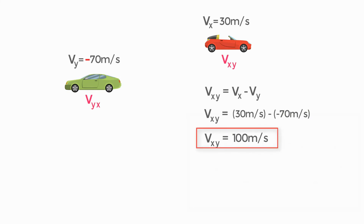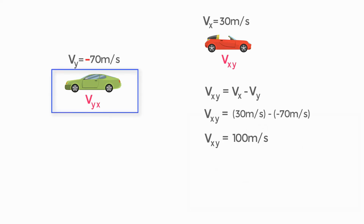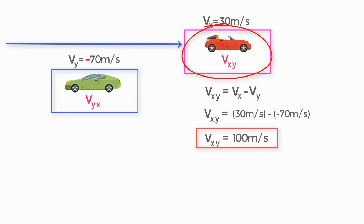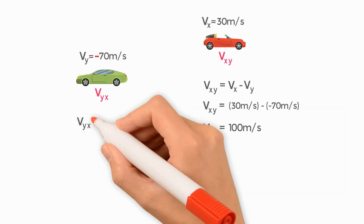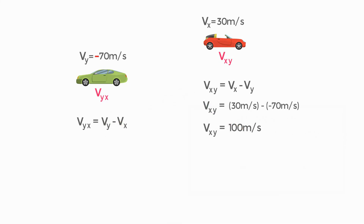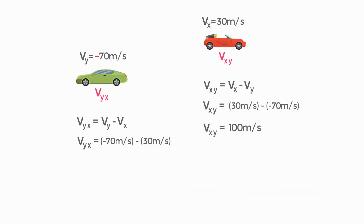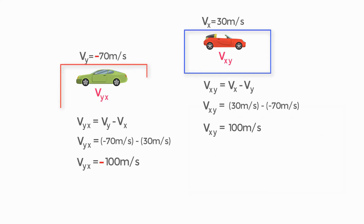What does 100 meters per second mean? It means that if you are moving in car X and car Y crosses you from the opposite direction, you will observe car Y moving at 100 meters per second. Similarly, VYX equals negative 70 minus 30 equals minus 100 meters per second, meaning if you are sitting in car Y and observe car X, it will be moving at 100 meters per second in the opposite direction.